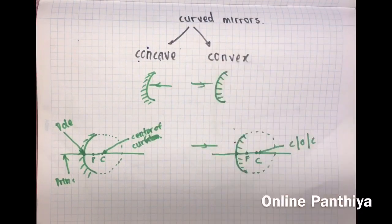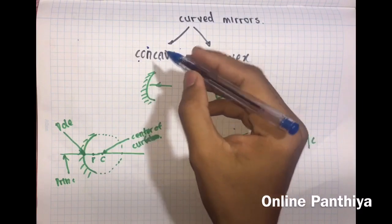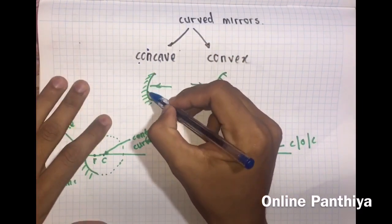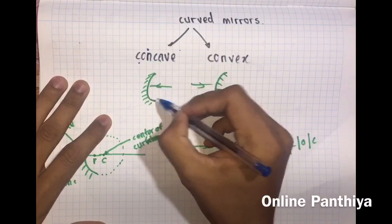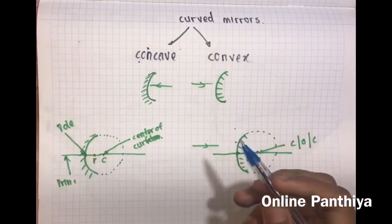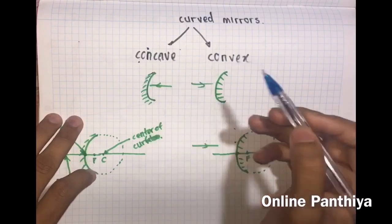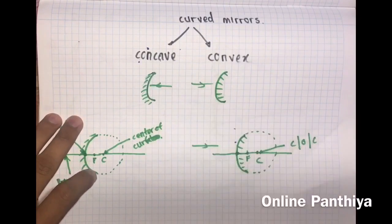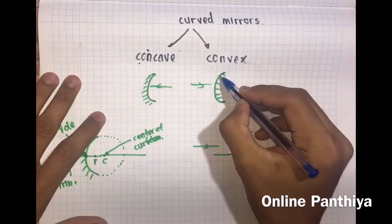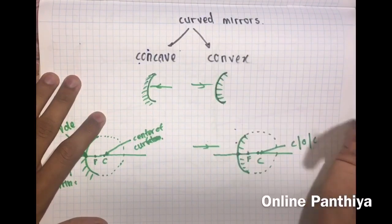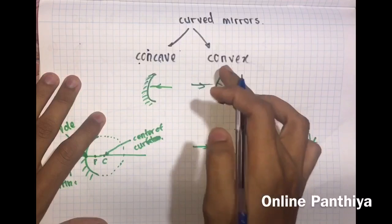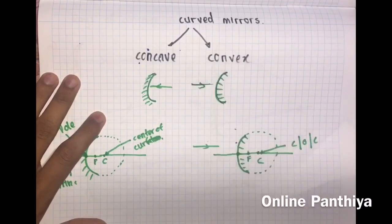If you consider the curved mirror, there are two types: the concave mirror and the convex mirror. It is somewhat similar to the lens part, but there are a few things which are totally opposite. For the concave mirror, the rays fall on the curved part. For the convex mirror, the rays fall towards the other side — not the curved part.